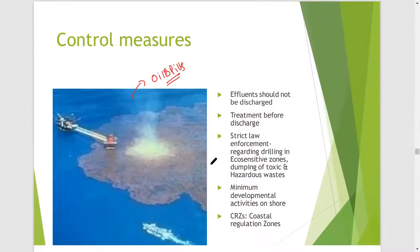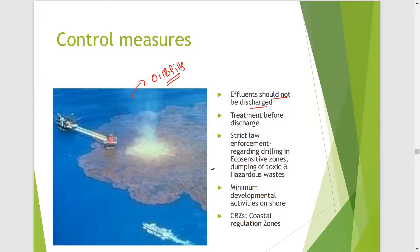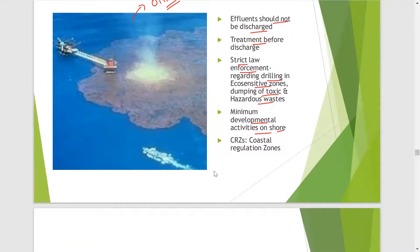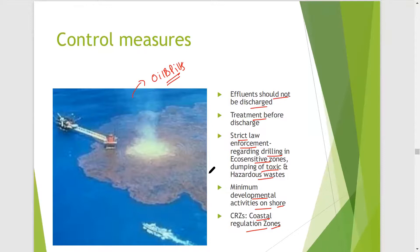How can we control marine pollution? Effluents should not be discharged directly into the oceans or sea — before discharging, they should be treated. There should be strict enforcement of laws and regulations regarding drilling in eco-sensitive zones, dumping of toxic and hazardous waste, minimizing developmental activities on the shore, and maintenance of coastal regulation zones.